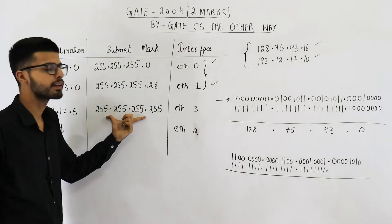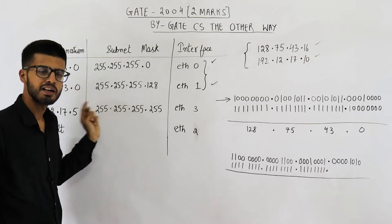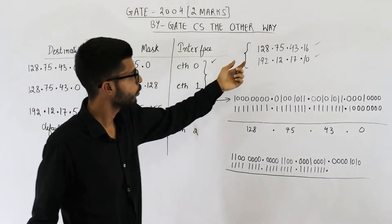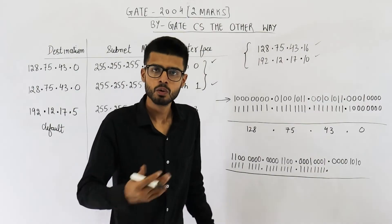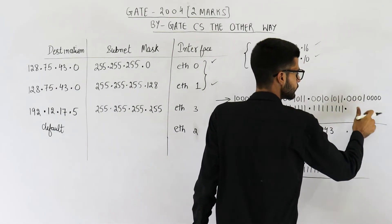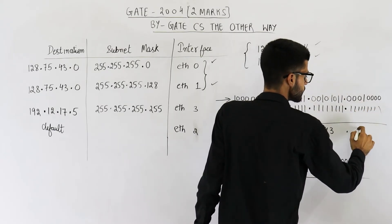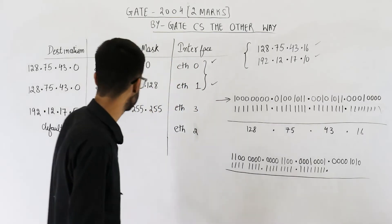That means 128.75.43 matches with the result. So both of these have a match. Still, we need to analyze this one also. So it is 255.255.255.255. It is all ones. That means whatever is the IP address, you are going to get that number only. See, if I write all ones here, then you are going to get 16 here. So let us see if it matches.